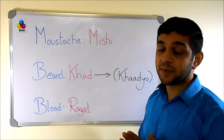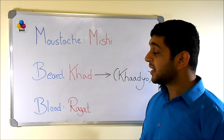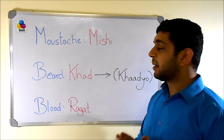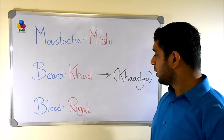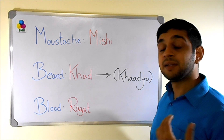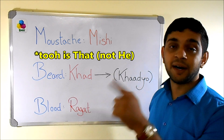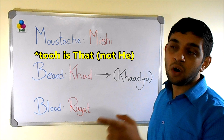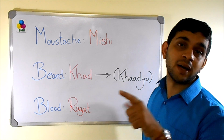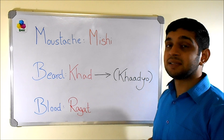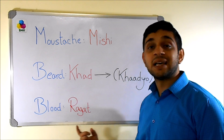Moustache in Kokani is 'mishi' — M-I-SH-I. I think this is pretty easy. Beard is 'khad'. If a person has a beard, they would be called 'khaadyo'. For example, 'ta khaadyo' means 'that guy with the beard', referring to a guy who has a beard. Blood is 'rugat'.